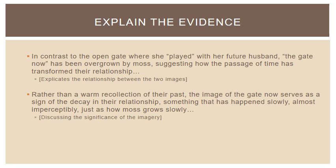After discussing that relationship a little bit, we could go on: "Rather than a warm recollection of their past, the image of the gate now serves as a sign of the decay in their relationship, something that has happened slowly, almost imperceptibly, just as how moss grows slowly." Again, discussing the significance of the imagery, we could go on for another sentence or two to unpack other details that might be important for our overall analysis.